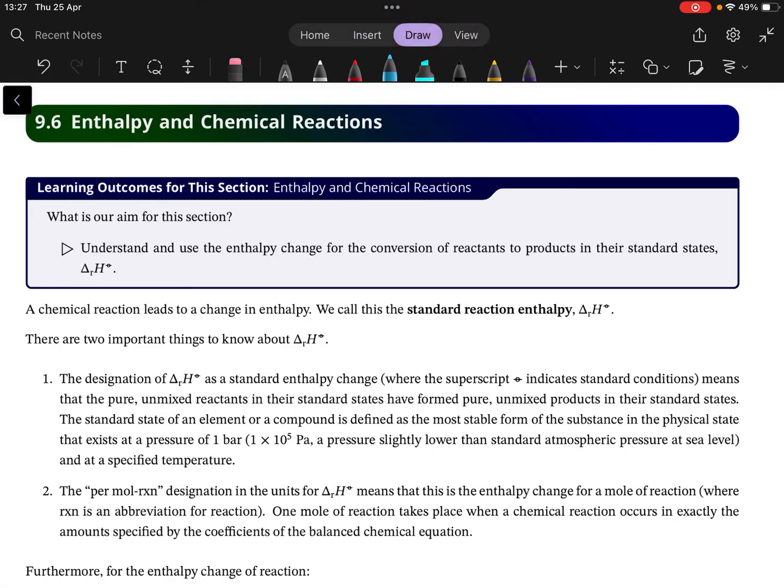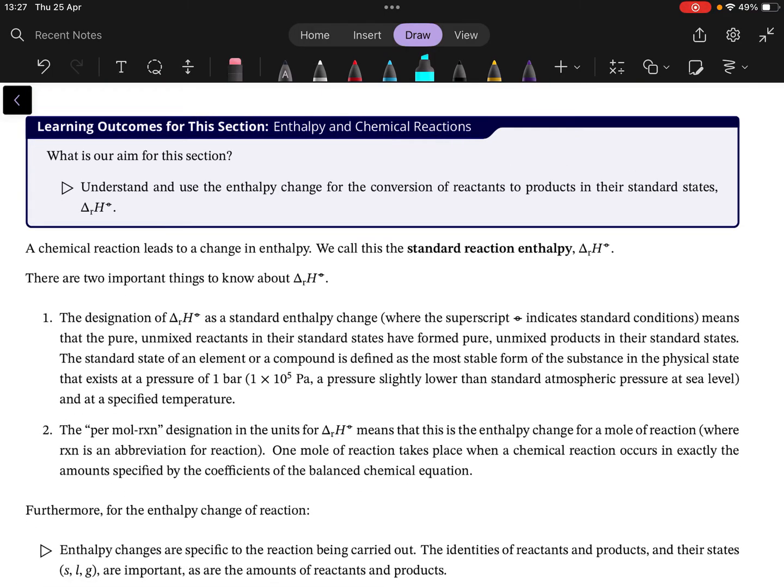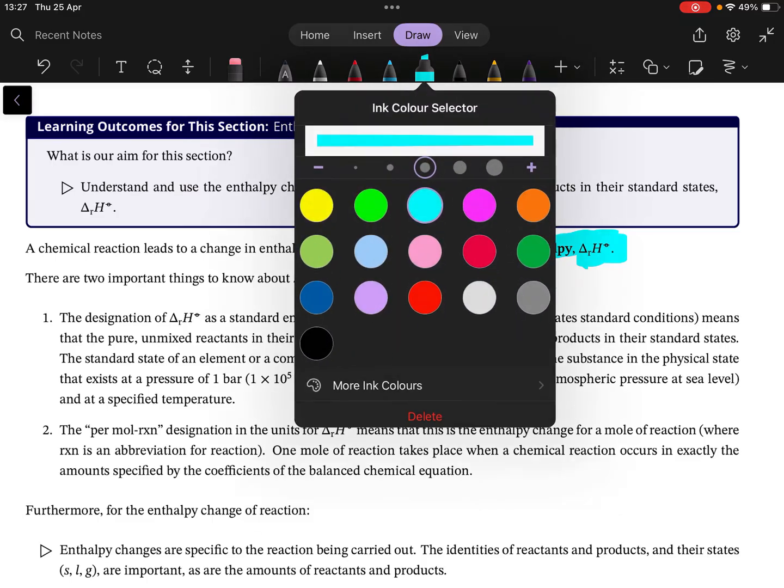We've defined the concept of enthalpy and now want to apply it to reactions. We define a standard reaction enthalpy and give it the symbol delta r.